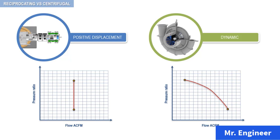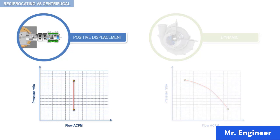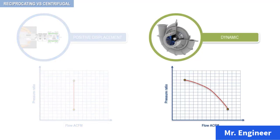Now, before finishing this video, what I really want you to understand and keep in mind is that reciprocating compressors are not self-limiting. This means that the discharge pressure will continue to rise until the compressor maximum case pressure is exceeded. On the other hand, centrifugal compressors are self-limiting. Their performance curves, as depicted here, show a decreasing head or pressure with increasing flow.